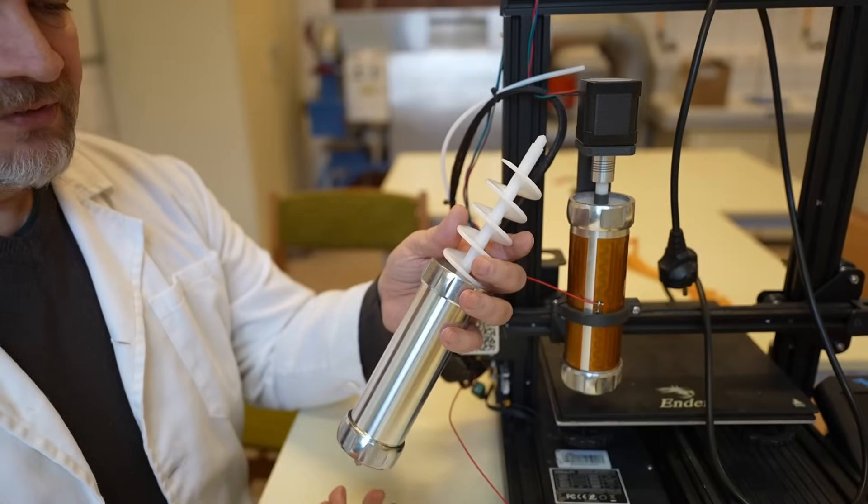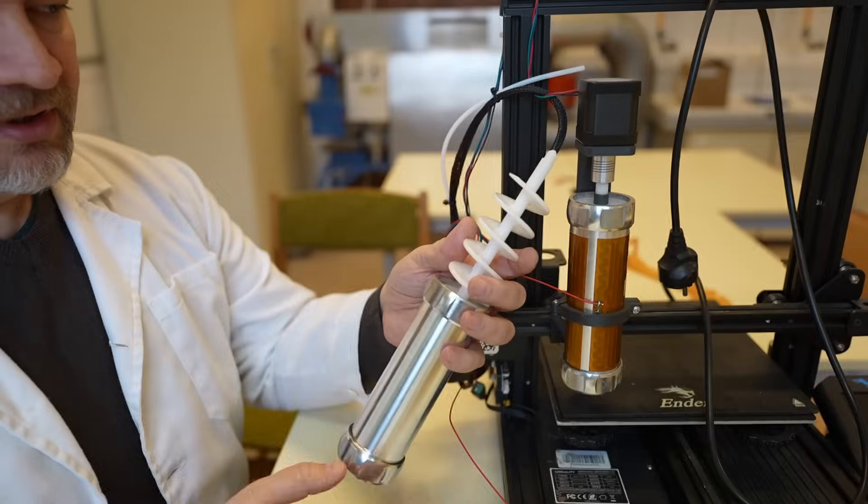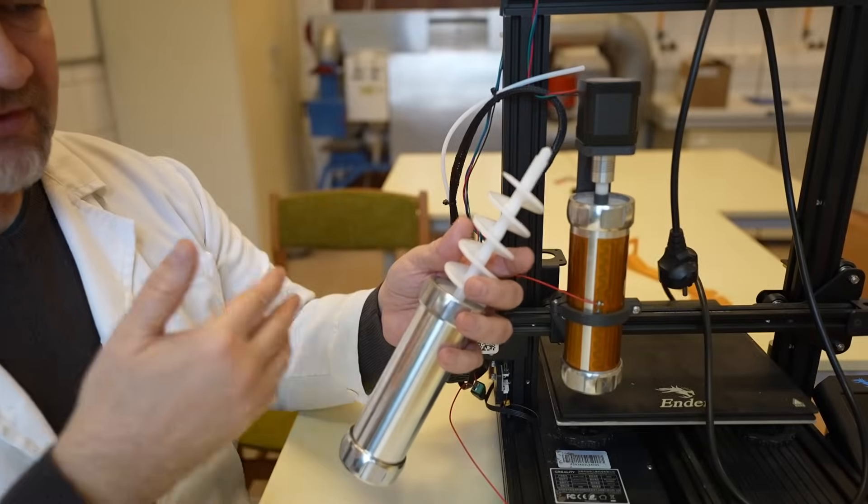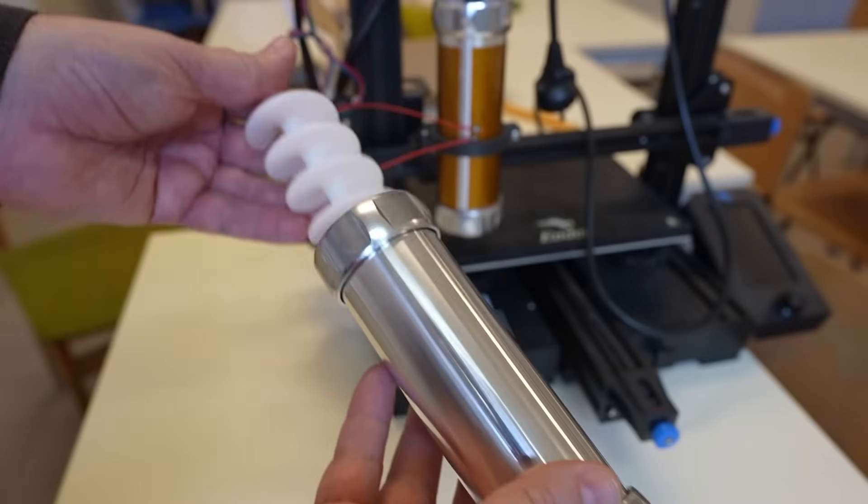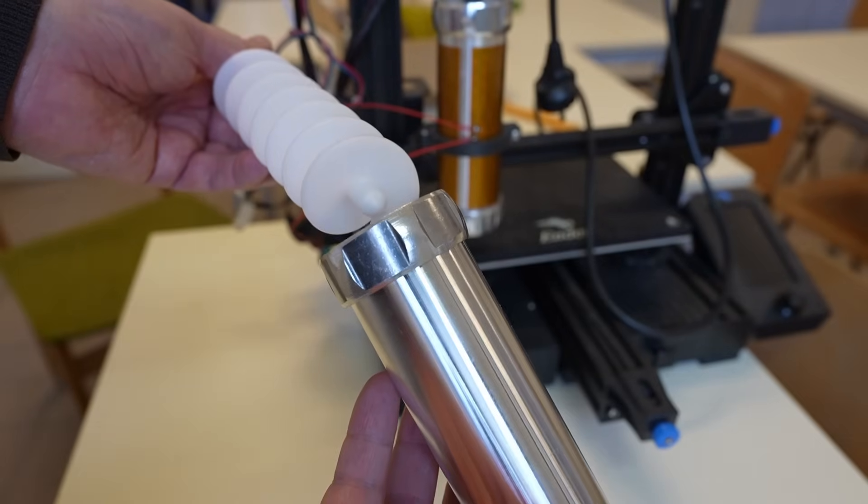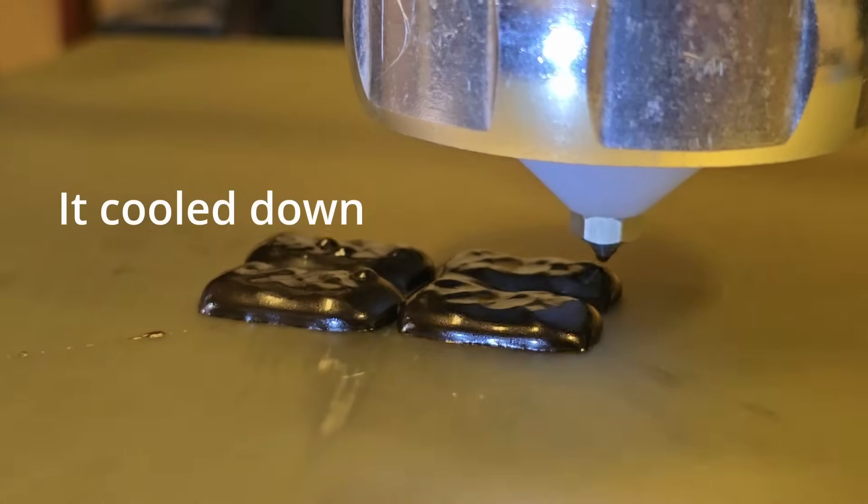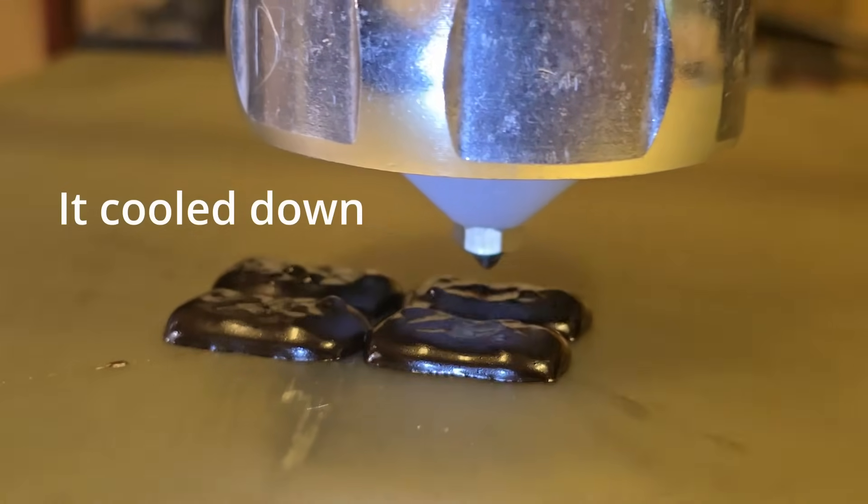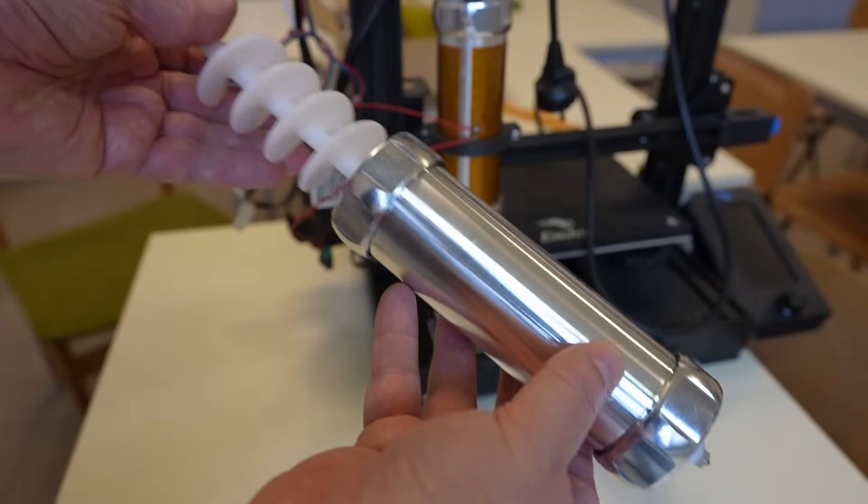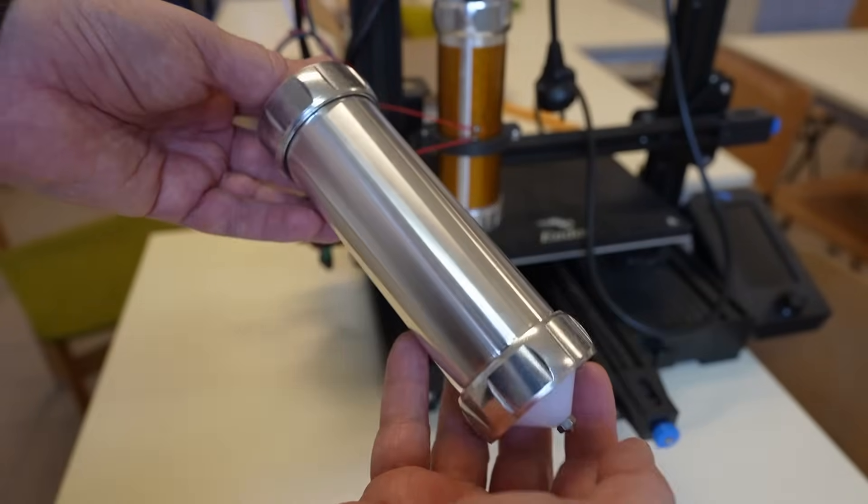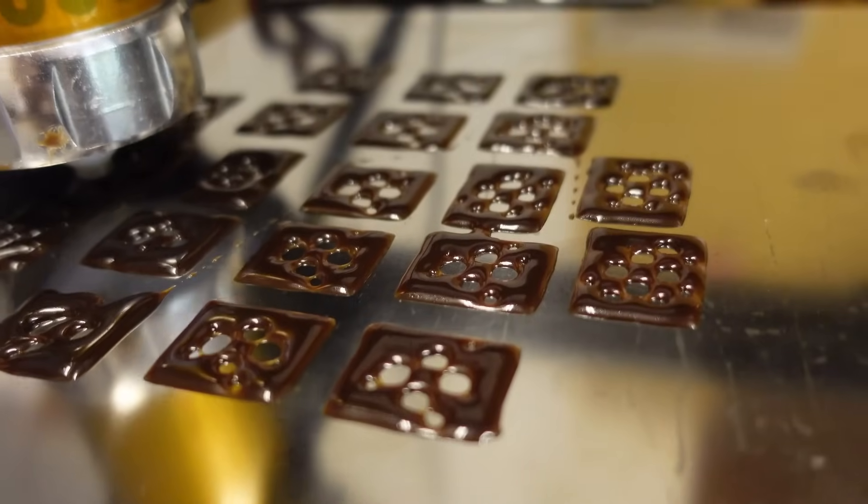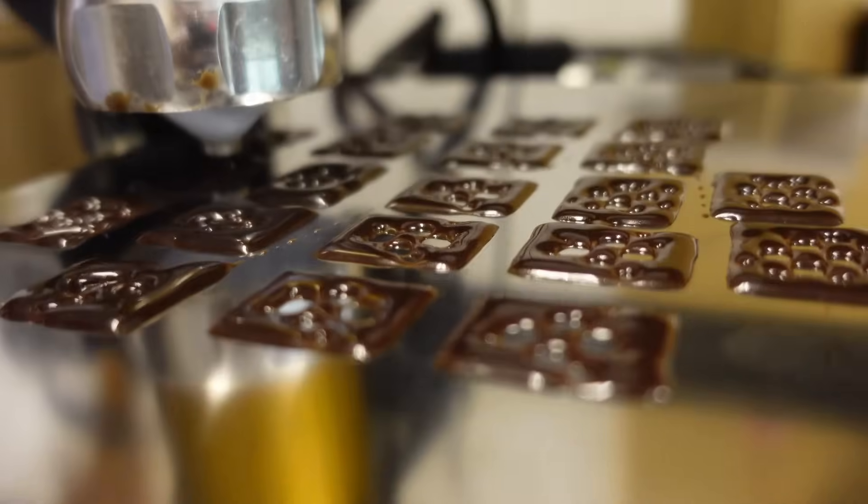I think the biggest flaw in design, if we want to use this for chocolate 3D printing, is this screw instead of the piston-cylinder solution. Because with this, the viscosity must be very specific. If it's too low, it will not push out the chocolate. If it's too high, it will just mix it, or even if pushed out, it will not stay there—it will flow immediately after one or two layers.